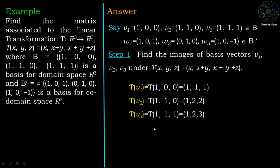Tv3 = T(1,1,1): the first coordinate is 1, the second coordinate is 1+1 = 2, and the third coordinate is 1+1+1 = 3. So Tv3 = (1,2,3). Therefore we have the images of V1, V2, V3 under T.